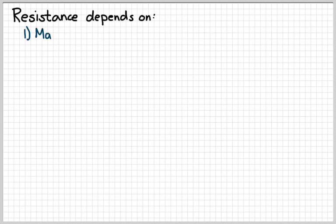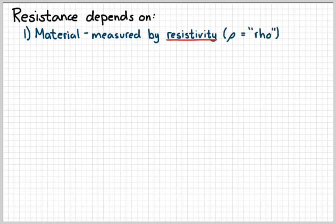So what does the resistance of an object depend on? It depends on three things. The first thing is just what it's made out of. So we could say the material. And the way that we quantify that is with a term called resistivity. Try not to get resistivity and resistance mixed up. And we can symbolize resistivity with the Greek letter rho. It kind of looks like a curvy P.